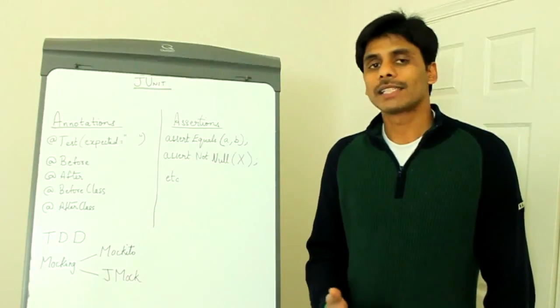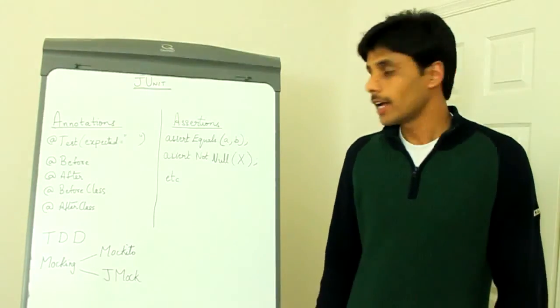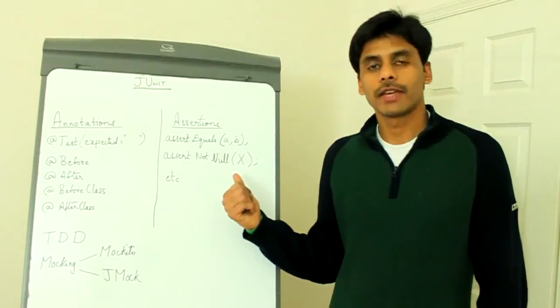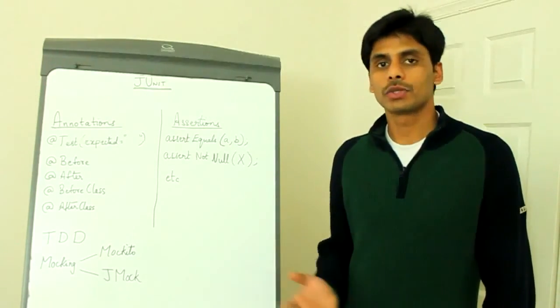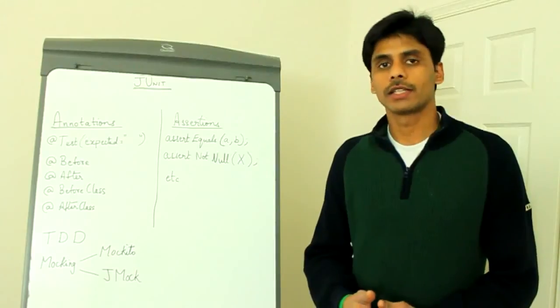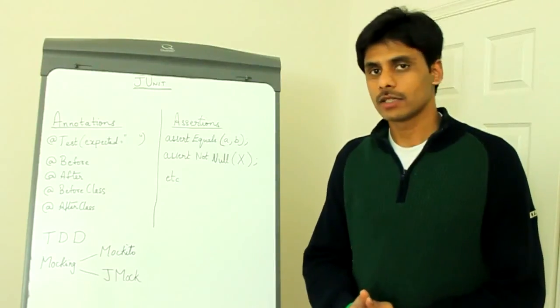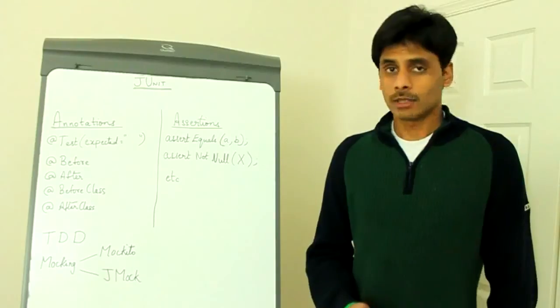And also the JUnit framework provides us with various assertions, which you can use to assert the actual values against the expected values from your methods. You use them within your test methods.